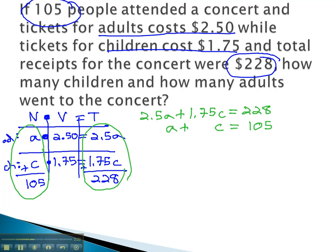Let's try the addition method. We can easily get opposites in front of the a's by multiplying both equations by negative 2.5 on both sides.